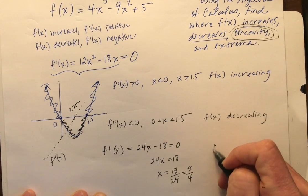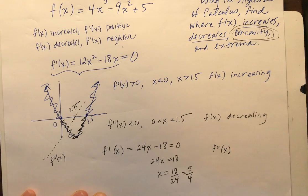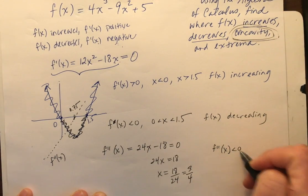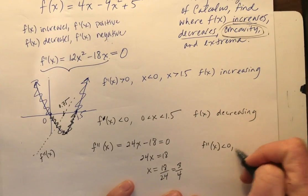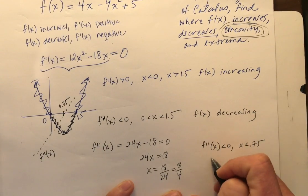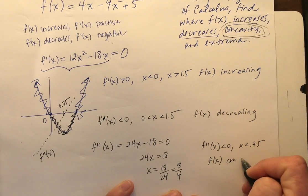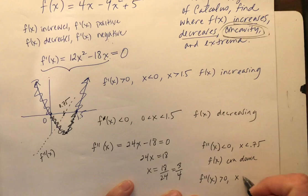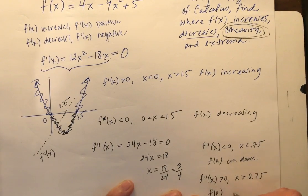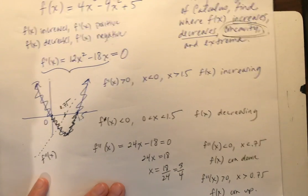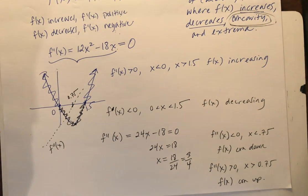So f''(x), oops, I'm sorry, now I'm realizing this should just be a, f'' is less than zero when x is less than 0.75. So therefore, f(x) is concave down, f''(x) is greater than 0.75. So f(x) is concave up, which I was kind of getting, alluding to this.